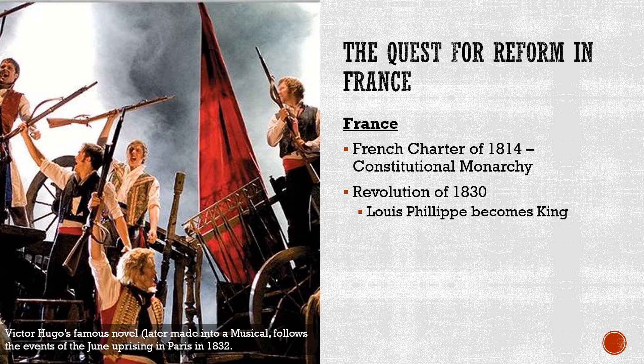Louis Philippe also didn't really have a great time being king. Very shortly after the Revolution of 1830, there were some bad harvests, a cholera epidemic, people were starving and getting really sick and dying in the streets. This led to a series of uprisings in 1832, which were ultimately brutally put down by Louis Philippe, which would not endear him to the people. Incidentally, this is where the story Les Misérables by Victor Hugo — later turned into a musical — is set: during these June uprisings in Paris in 1832. So if you know 'Do You Hear the People Sing?' — you get my drift.